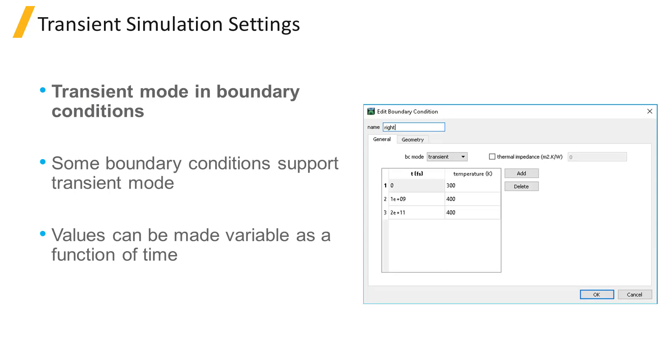In addition to the settings available for sources and the solver, when performing transient simulations, some of the boundary conditions offer a transient mode, which can be used to make the boundary condition variable in time. These settings are available from the property editor window for each boundary condition object.